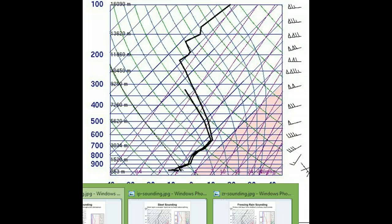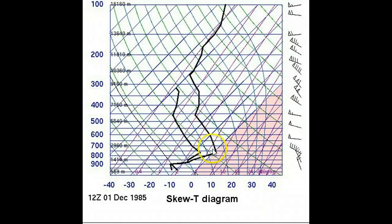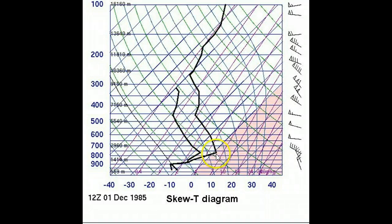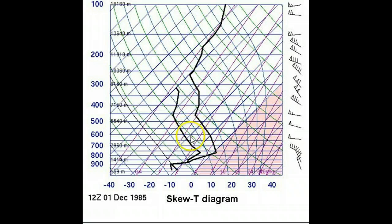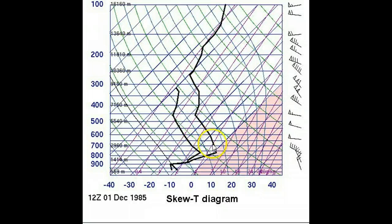Now, if you're looking for sleet, what you want to look for is — here's your zero degree isotherm again — but look what happens to the temperature profile. The temperature profile is going above freezing between 700 and 800 millibars. So that means any snow that's falling up here — and this sounding obviously is not as saturated — is probably going to be snowing up in there, and you're going to have snow falling into this warm layer.